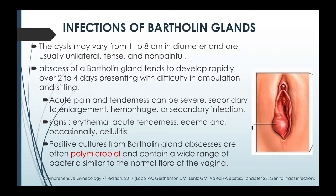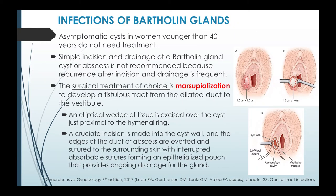The abscess presents with difficulty in ambulation and sitting. Acute pain and tenderness from a Bartholin gland abscess can be very severe, usually secondary to enlargement, hemorrhage, or secondary infection. Signs include erythema, acute tenderness, edema, and occasionally cellulitis. Positive cultures from Bartholin gland abscesses are often polymicrobial and contain a wide range of bacteria similar to the normal flora of the vagina. Asymptomatic cysts in women younger than 40 years old do not need treatment.